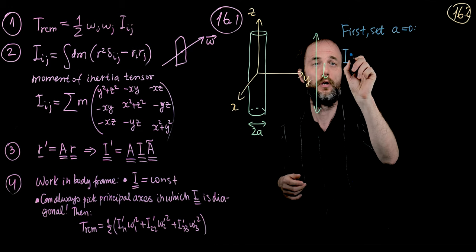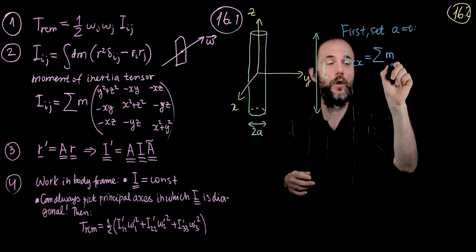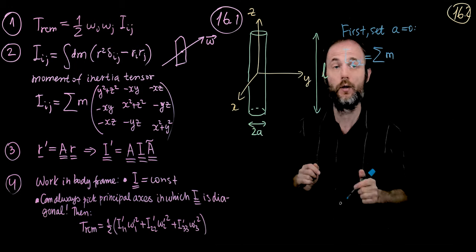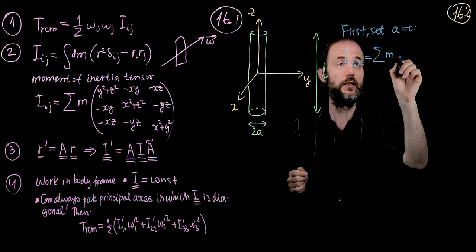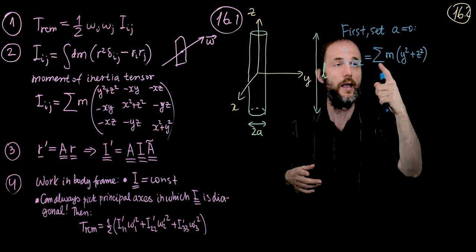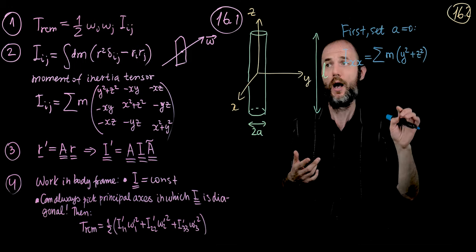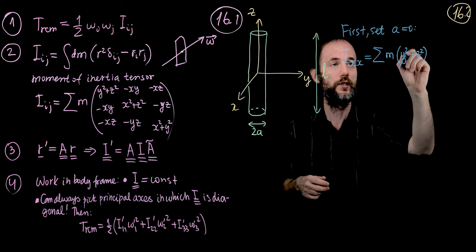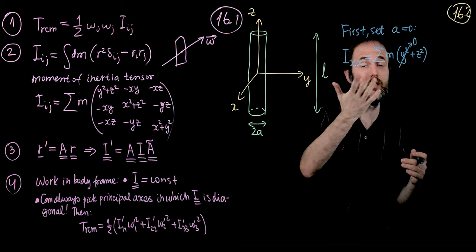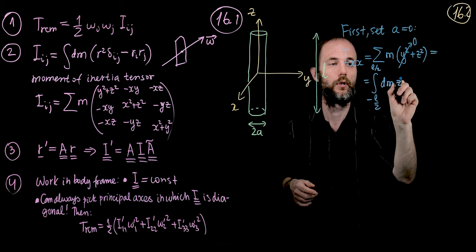As an example, let's compute the xx component of the moment of inertia tensor. Based on the definition, that is the sum over m times y squared plus z squared — I_xx doesn't have x squared in it, so this is simply r squared minus x squared. Because a equals zero, y squared goes to zero, so we need to integrate dm times z squared.